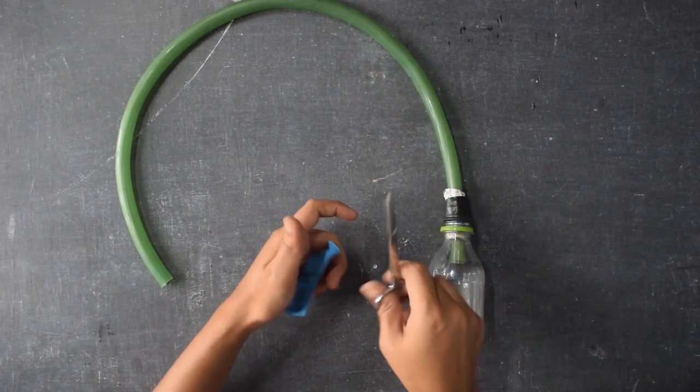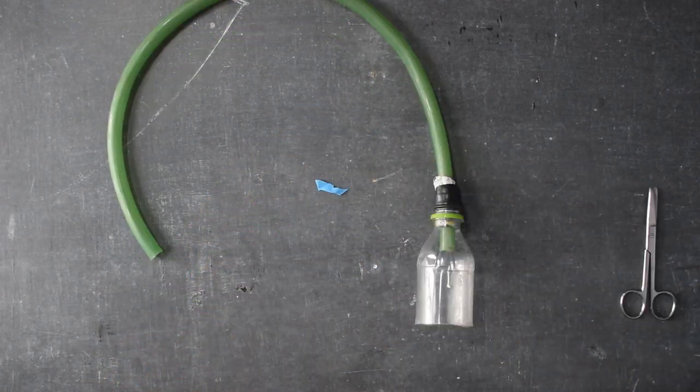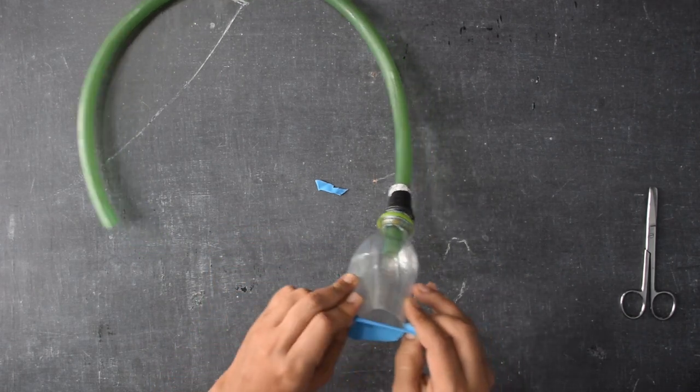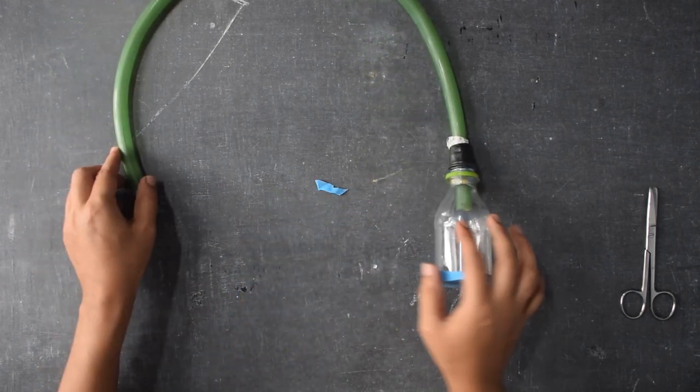Now take a balloon and cut the mouth of the balloon off. Now stretch the rest of the balloon at the bottom half of the bottle and close the bottom half completely.